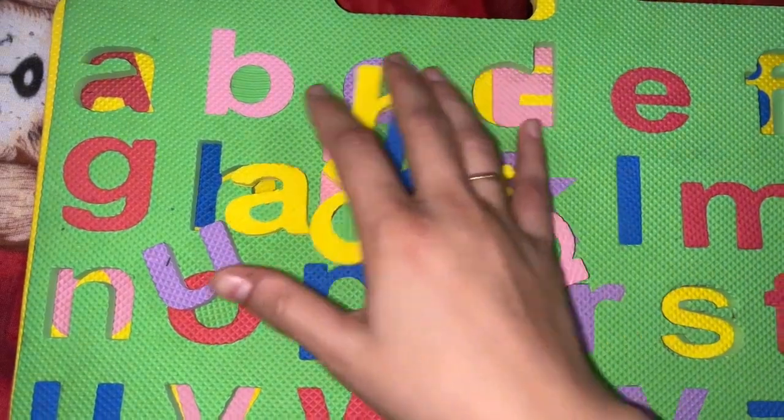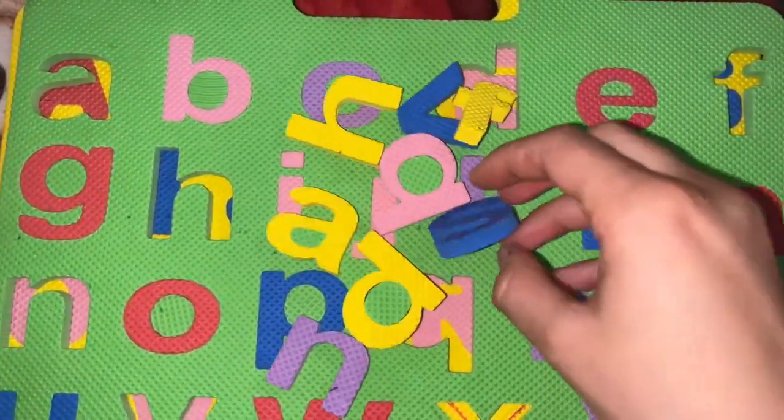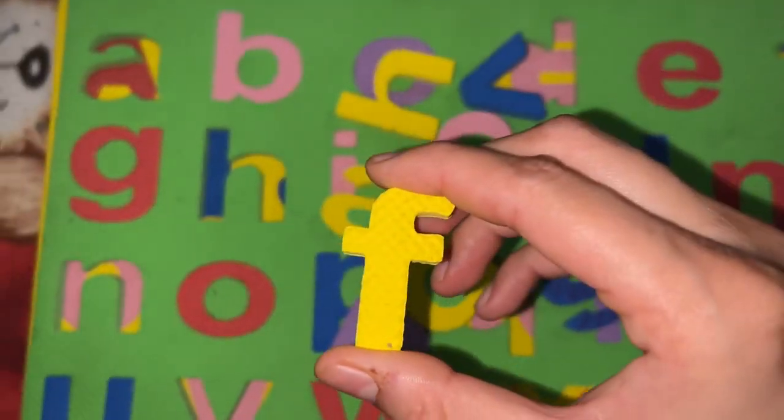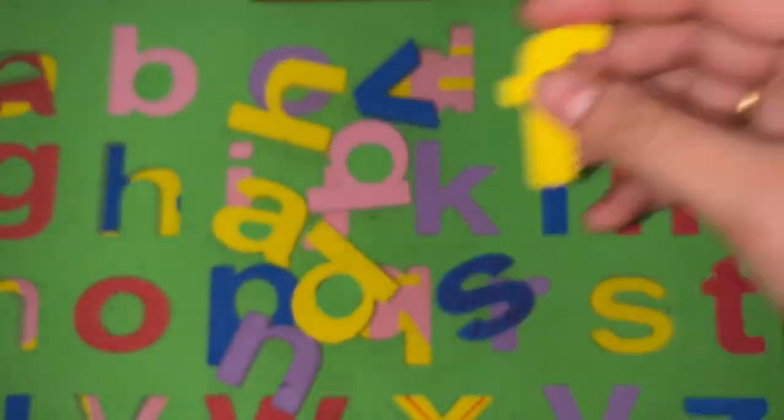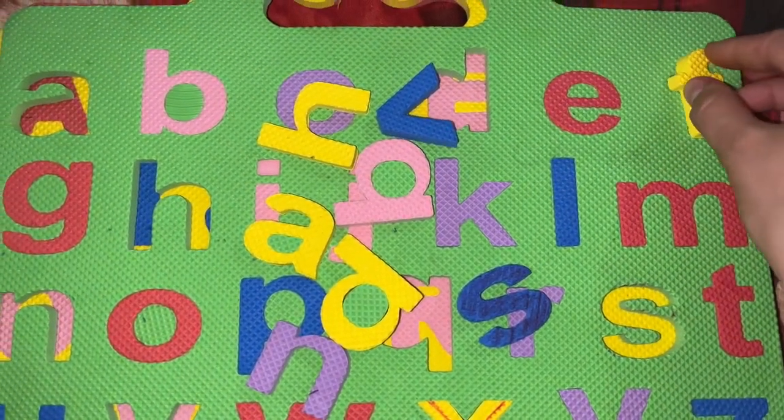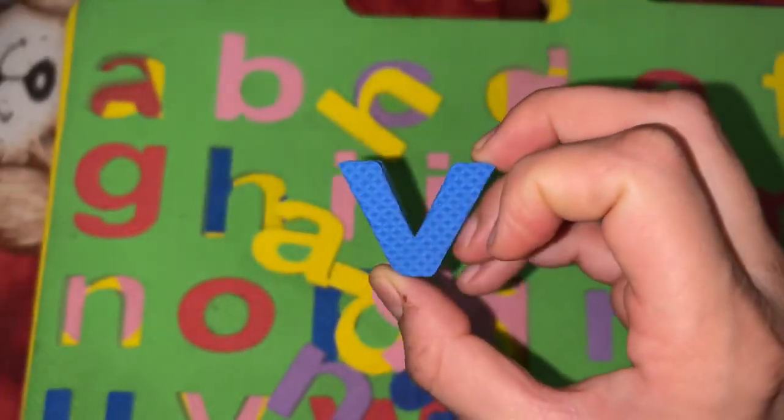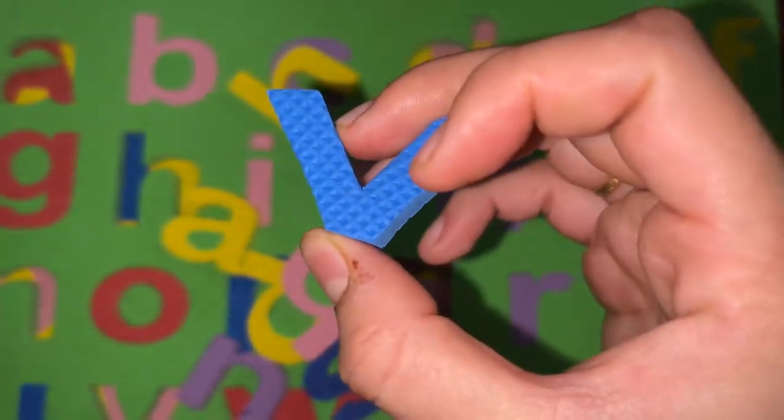Hello kids, welcome back to Fun Learning. Let's learn the alphabet. Identify the first letter. It's F, F for fish and F for frog. The next letter is letter V, V for van and V for vanity.